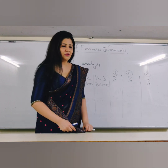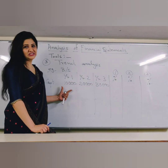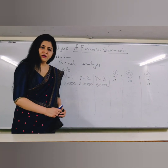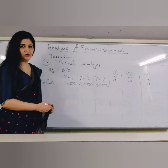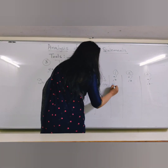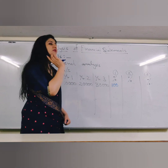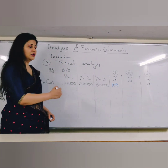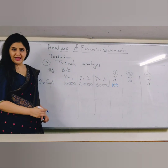In the case of the fixed base method, we consider the first year as our base year. When we consider it as the base year, the base year percentage will always be taken as 100%. And then other years will be compared with that.